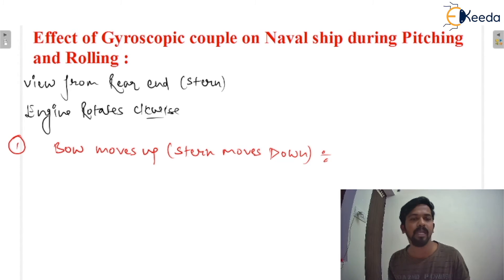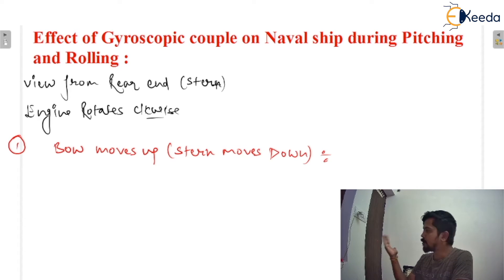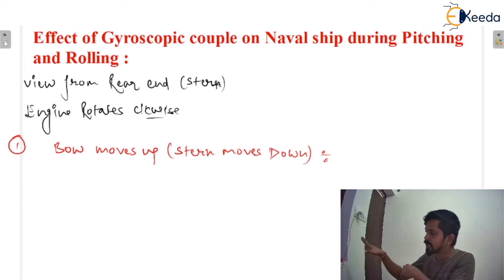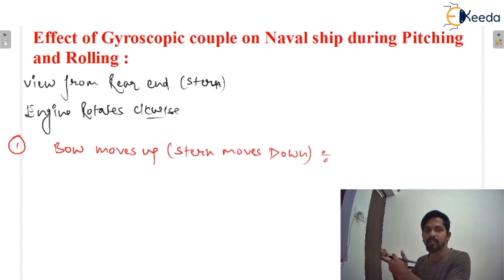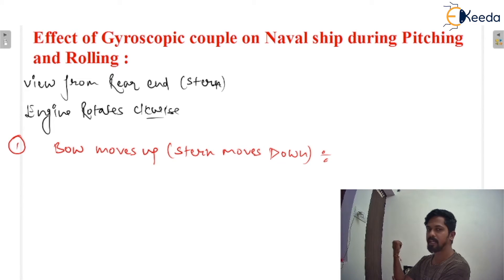Now we will find out the effect of gyroscopic couple. Bow moves up means the situation is like that. We consider the reactive gyroscopic couple as the effect. That means bow moves up means the reactive gyroscopic couple acts in that direction and the active gyroscopic couple in that direction. View from the rear end means we are looking at the ship from the rear end — that is the stern. Engine rotating clockwise means it would rotate like that.